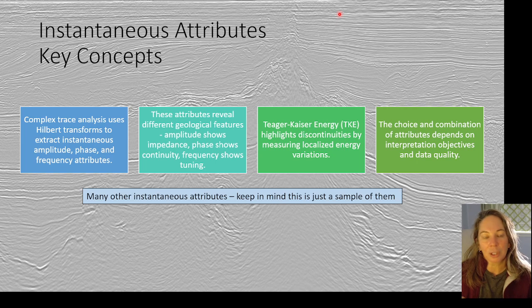I didn't really talk about like peak magnitude and peak frequency, but those are two of the attributes that we really like to use when we start putting attributes into machine learning.